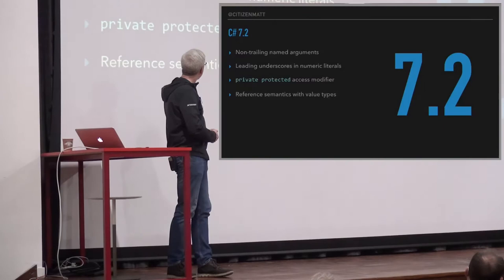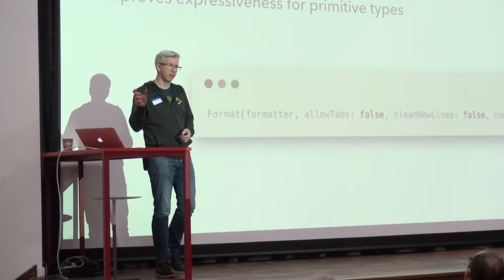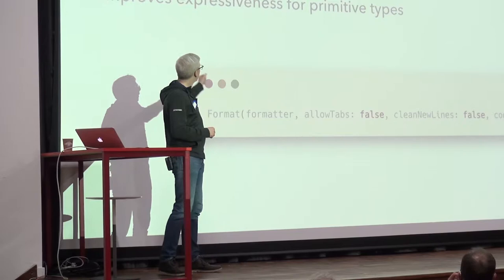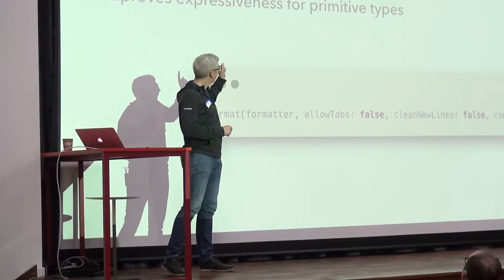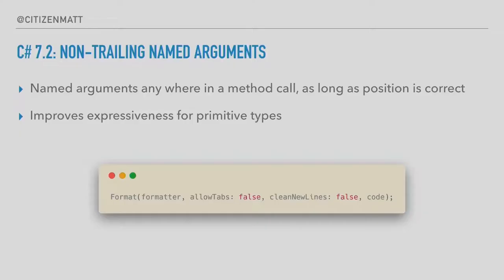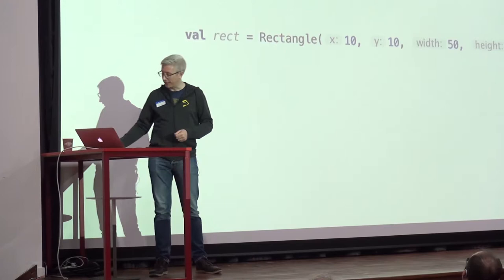Non-trailing named arguments: not terribly exciting. We've had named arguments before with optional parameters, but normally they sit at the end of a method call so you can move things around and have them in any order. This allows you to put the names in the middle of the call, and it's really useful for improving the expressiveness of your primitive types. If you've got a method call with a lot of boolean literal values — what does `true, false, false, false, true` mean? — you can now put the labels in, giving you a kind of annotation. IntelliJ has parameter hints for Java, Kotlin, PHP; Rider doesn't have it for C# yet, but it would be nice.